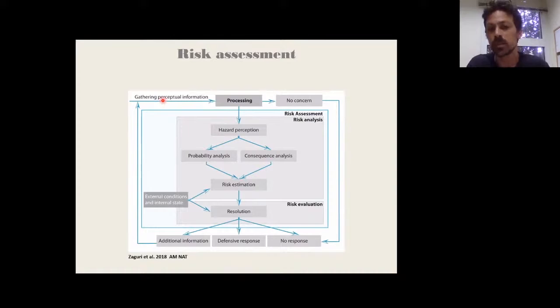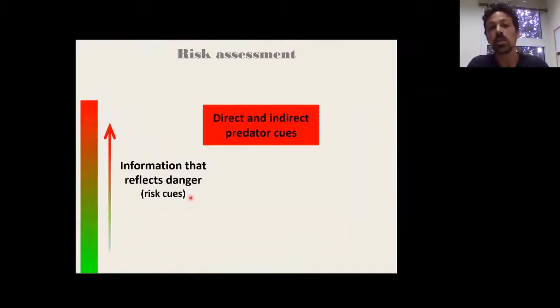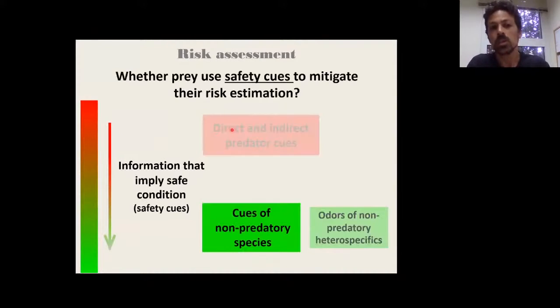Of course, sometimes the level of risk does not justify any response, or the prey might decide to gather additional information and repeat the assessment process. The information theoretic approach suggests that prey will use as many sensory modalities and perceptual information as available. However, we in the field of predator-prey, up until today, were focusing on information that reflects danger, meaning risky cues or direct and indirect predator cues.